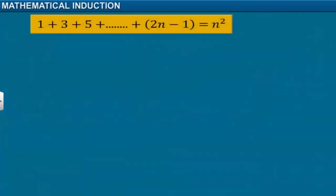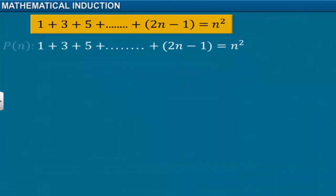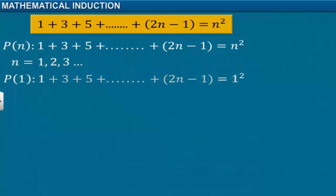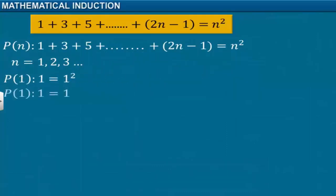Let's look at an example. The formula for the sum of the first n odd positive integers is n squared. Let this statement be P(n). This can be proved by replacing n with 1, 2, 3, and so on. Let's first consider n equal to 1. That is, 1 is equal to the square of the first odd positive integer. Thus, P(1) is true. This statement can be considered as a fact.